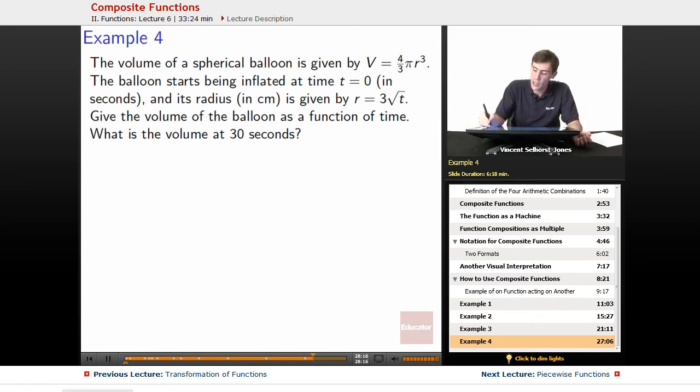All right, so first thing we need to do is give the volume of the balloon as a function of time. Well, first off, we might want to see these as functions, because right now, v equals four thirds pi r cubed, r equals three root t, they're not actually functions right now, but we could easily turn them into functions.